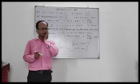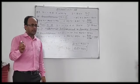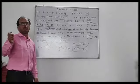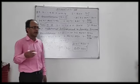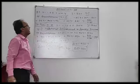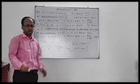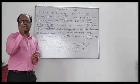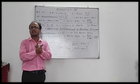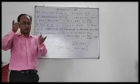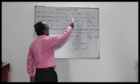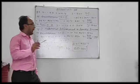When the economy is in equilibrium, investments are equal to saving. In today's class we solve some questions related to the saving function, where we have to find investment, income, etc. In the first question, the saving function is given as S = minus 25 plus 0.25Y.